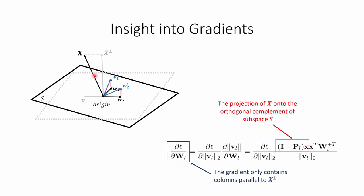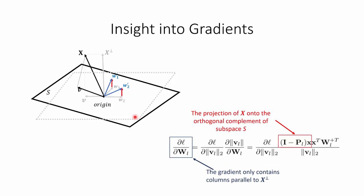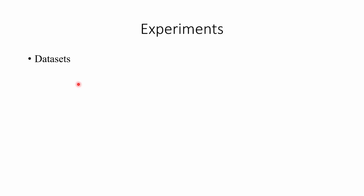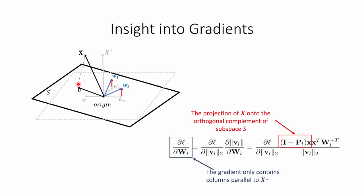What this means is that in each iteration, the bases of the subspace — W1 and W2 — only get updated in the directions of these two red arrows. This means we are actually tilting the subspace so that the norm of the subspace capsule becomes larger for the target class. This iterative process continues until the feature vector can be fully contained in the subspace, or the misclassification error is very low.